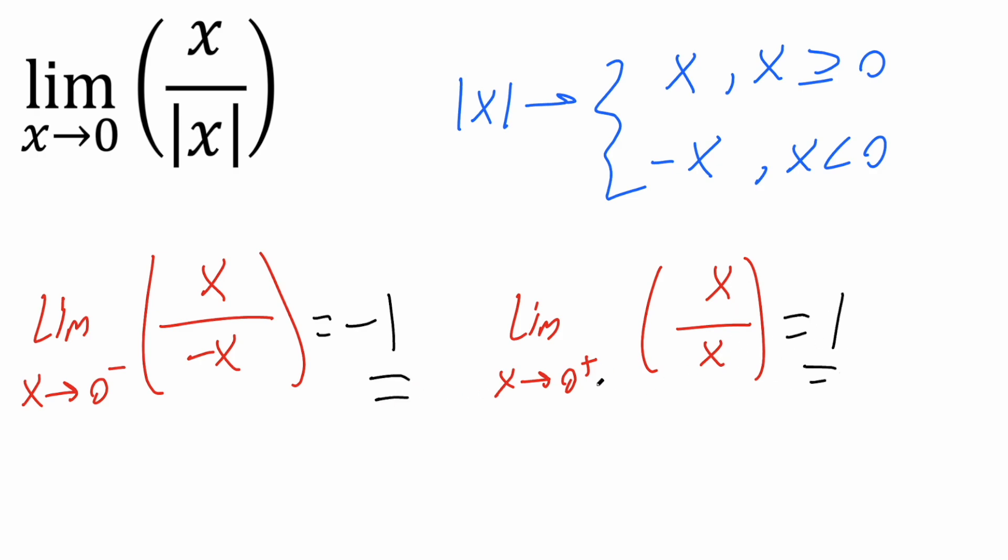Because they're both different, our conclusion is that the limit does not exist. So you could say DNE, or you could spell it out. You could say does not exist. And that's pretty much it for this video.